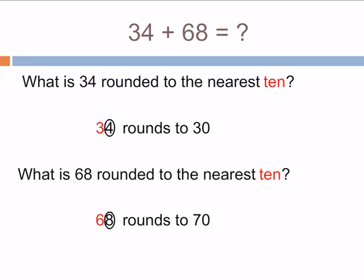So what is 34 rounded to the nearest 10? I made 10 red there, and I made the 10 in the problem red. So 3 is the tens place. We look at the number to the right—I circled that. It's 4. That's less than 5, so 3 gets to stay the same. 34 rounds to 30.